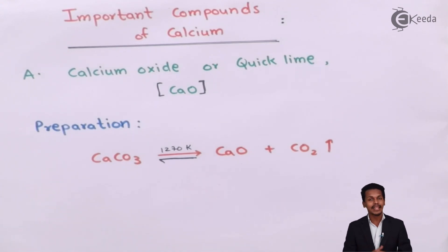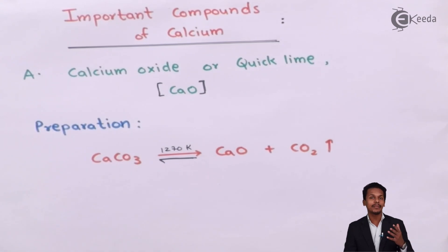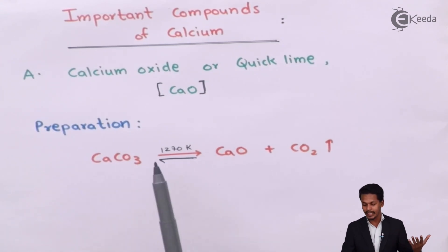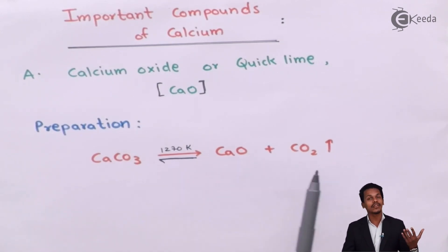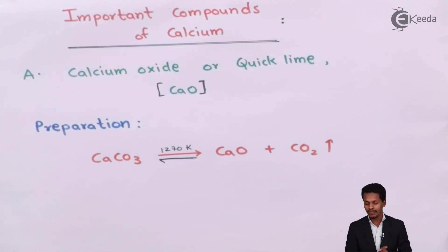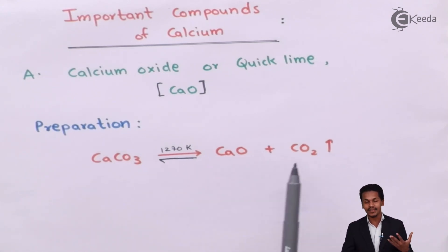Calcium oxide can be prepared from CaCO3, basically known as calcium carbonate, which we can also find in chalk. We decompose it at a temperature of 1270 Kelvin. What happens is calcium oxide is formed while carbon dioxide is liberated. If we take one gram of calcium carbonate and decompose it, most of the mass remains as solid while the rest evolves as carbon dioxide gas.